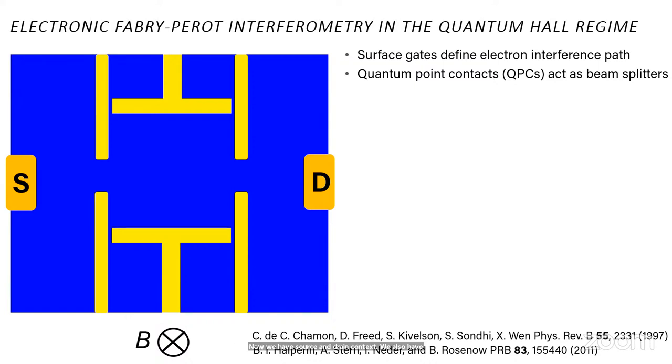The surface gates define the electron interference path. These two gates that come together in a narrow constriction are referred to as quantum point contacts. They serve as the electronic analog of a beam splitter. They have to partition the edge states. If you're not familiar with this type of physics, in the quantum Hall regime, current is primarily carried by chiral edge modes that circulate around the periphery of the device. So the edge mode comes in to the first QPC. It is partially backscattered, going from the lower edge to the upper edge.